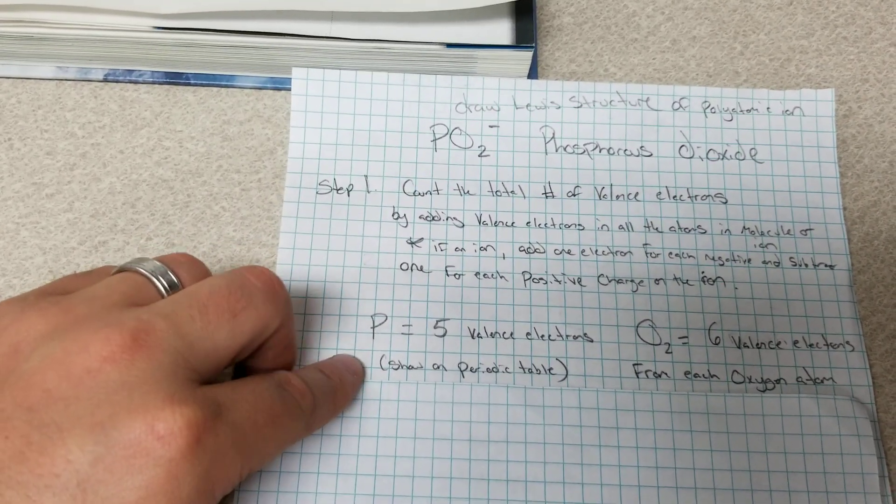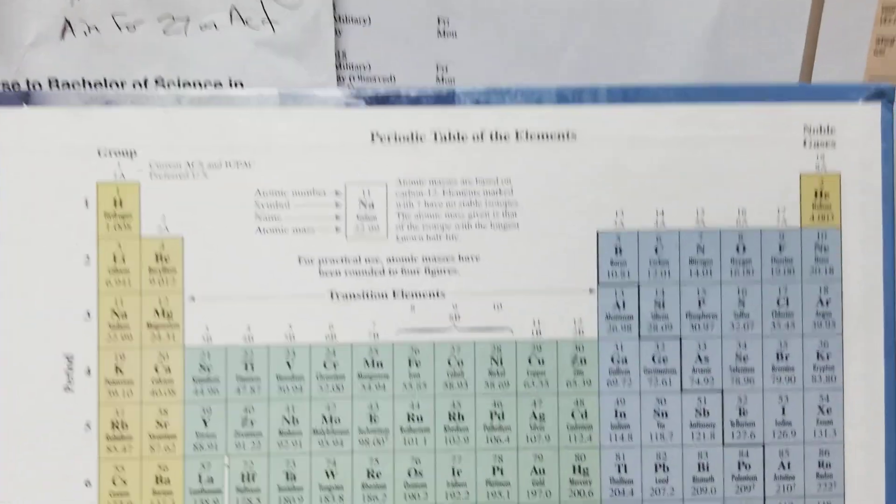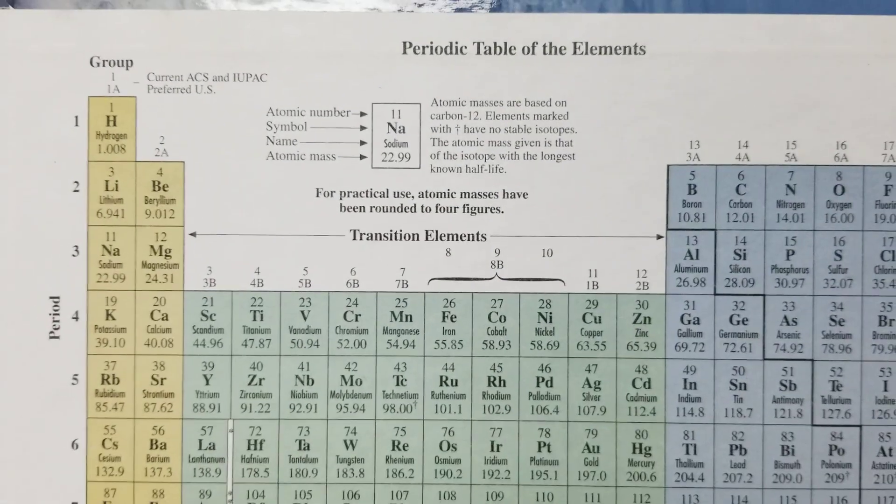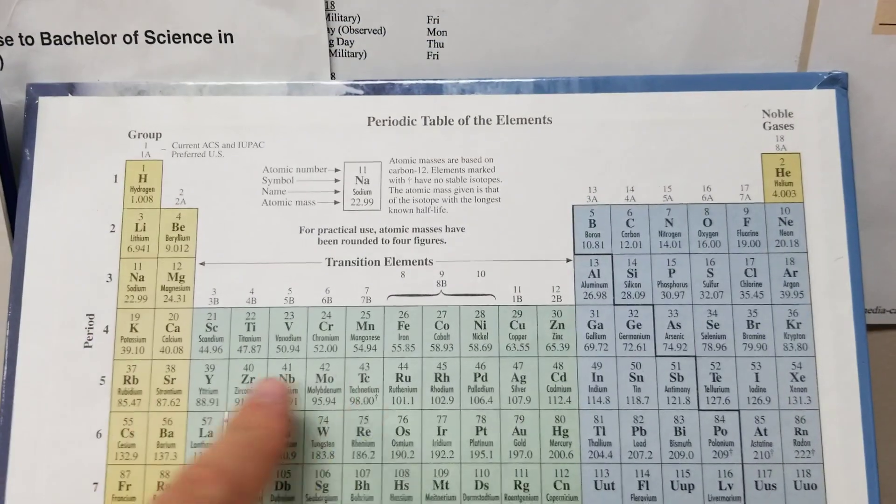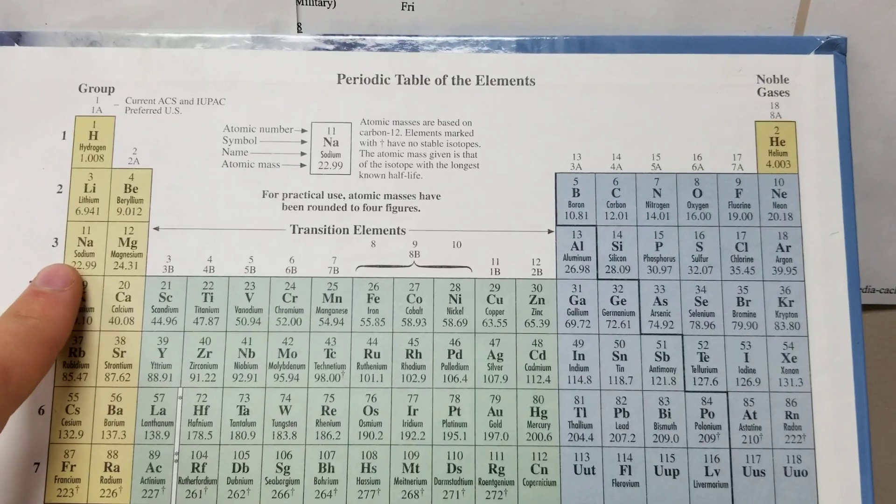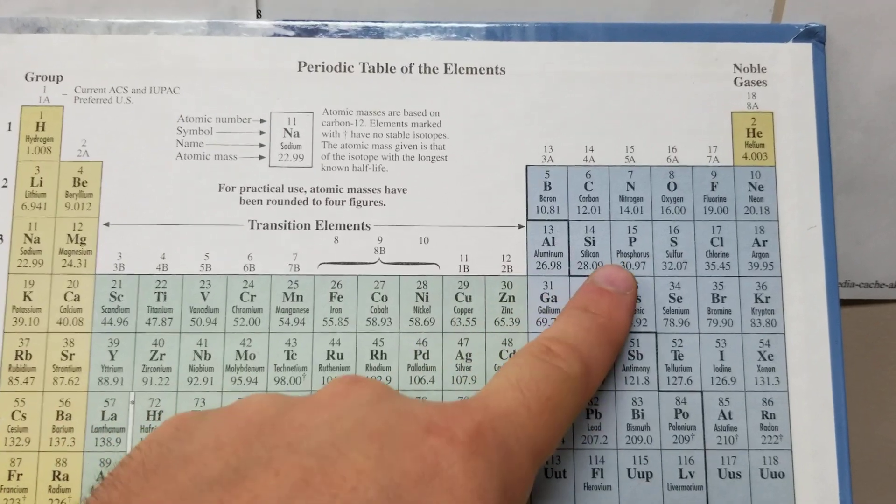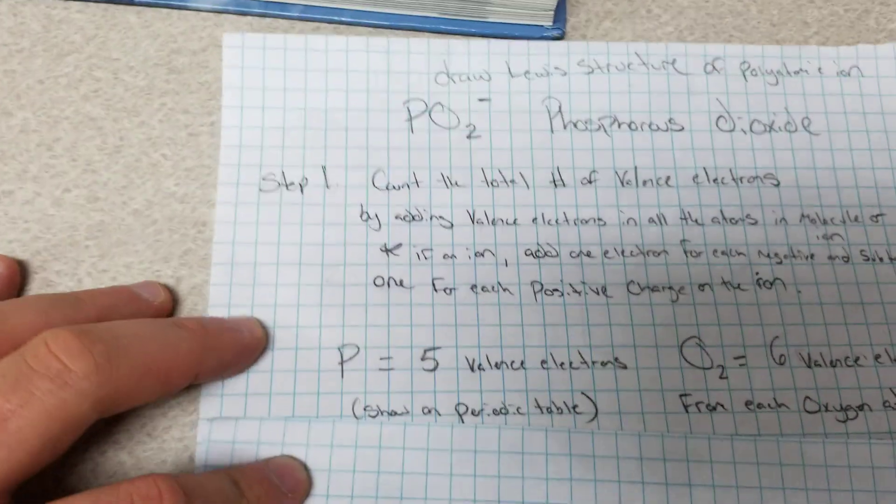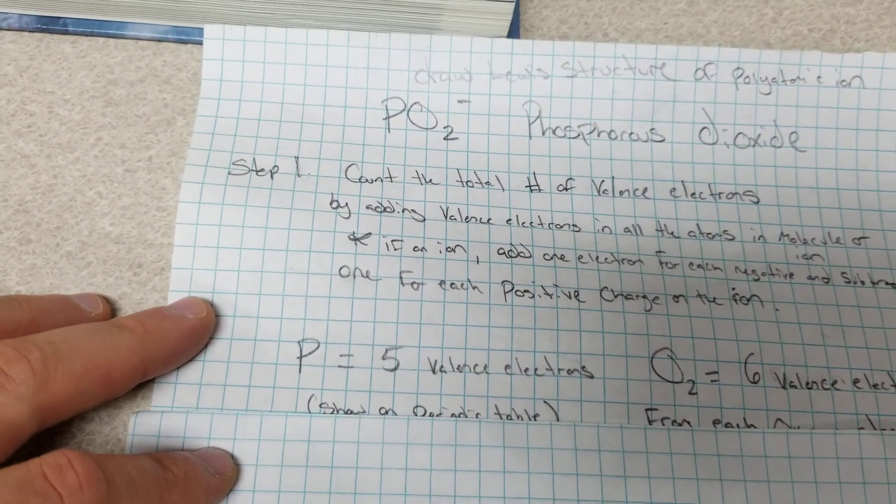So in phosphorous we have five electrons. How do we know? When we look at the periodic table we identify phosphorous as having one, two, three, four, five valence electrons. So phosphorous has five valence electrons and we're going to count five valence electrons.